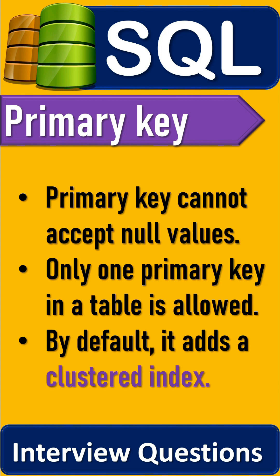Only one primary key is allowed in a table. A primary key of one table can be referenced by a foreign key of another table. Primary key cannot accept null values. By default, it adds a clustered index.